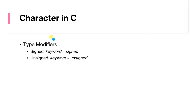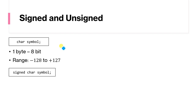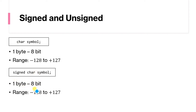Like with integers, there are type modifiers that can modify the character data type. There are two type modifiers for character: signed and unsigned. Signed char and char are the same — both allocate 1 byte (8 bits) and have a range of -128 to +127. Whether you write char or signed char, you are telling the compiler that both positive and negative numbers will be used, and the range remains the same.